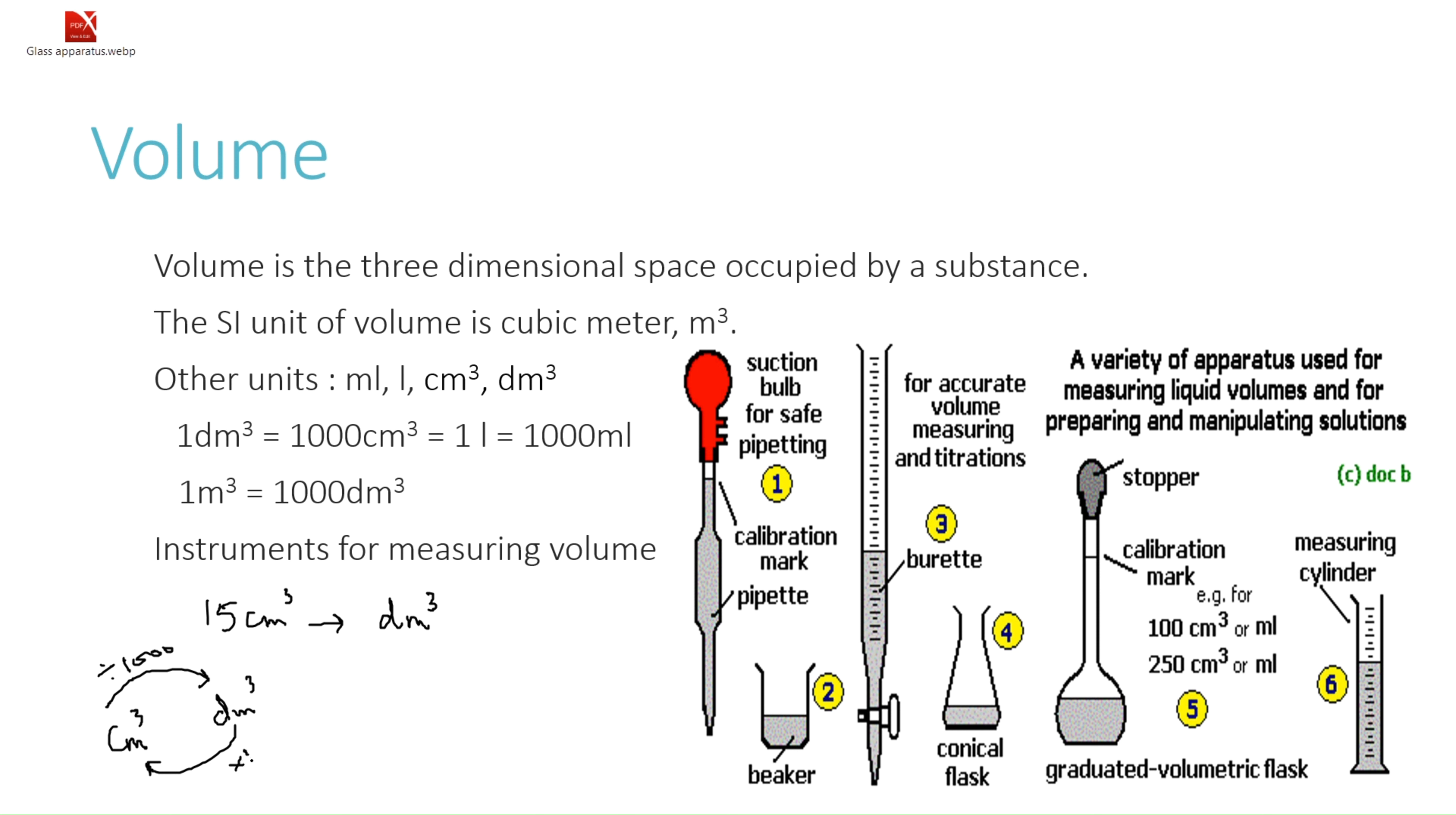Here we have to convert 15 centimeter cube into decimeter cube, so we will divide 15 with 1000 and your answer will be 0.015 decimeter cube.